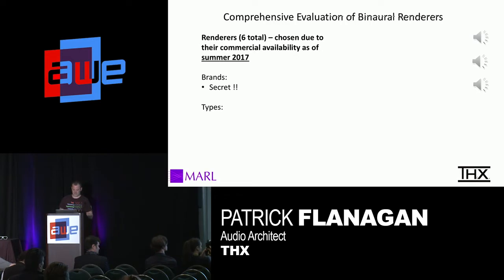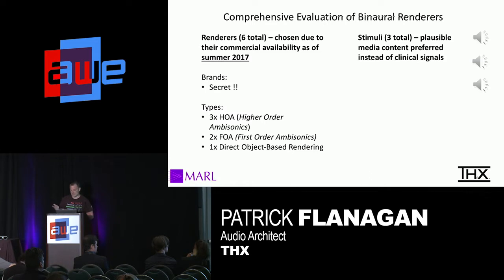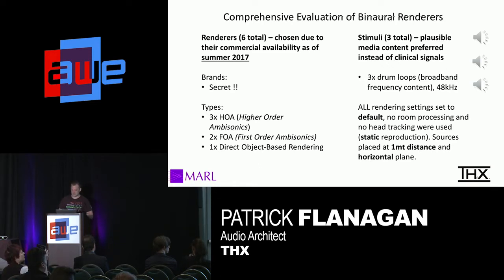So we have a comprehensive evaluation of binaural renderers. There were six renderers in total — all commercially available as of summer 2017. The types: there were three HOA renderers, high order ambisonics; two FOA, first order ambisonics; and one direct HRTF convolution-based renderer. The stimuli were broadband drum loops. All renderers were set to default, so we didn't manipulate the room or any sort of reverb settings. All point sources were placed at one meter distance on the horizontal plane.